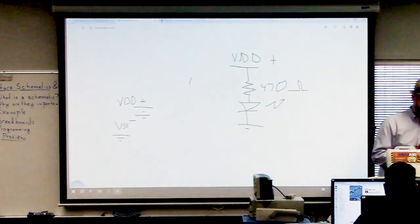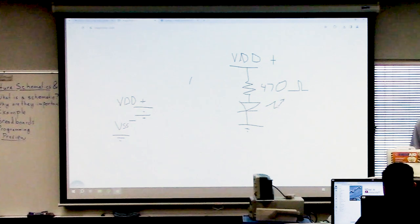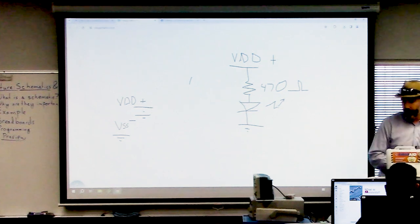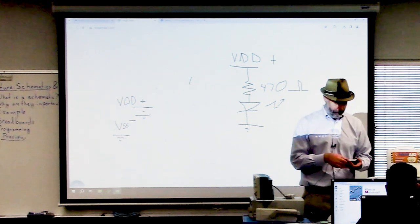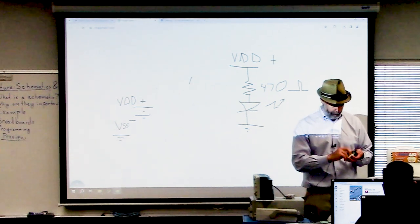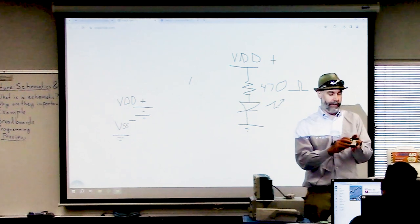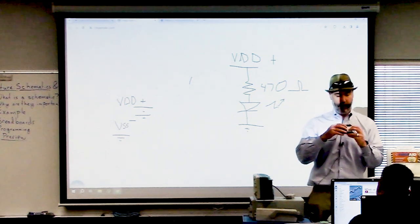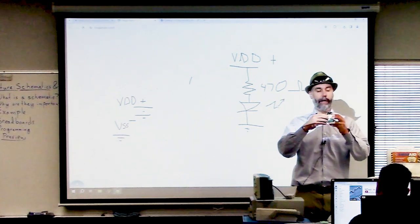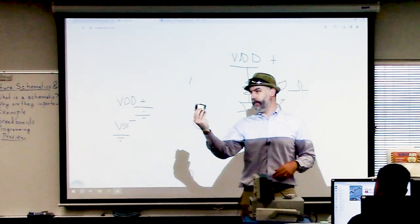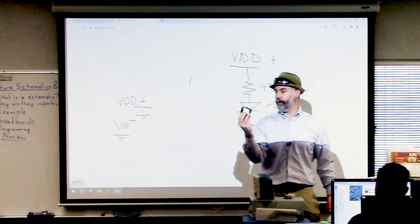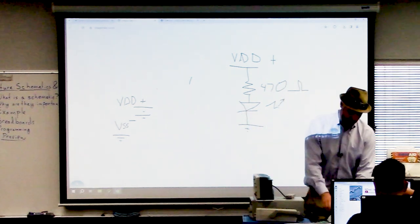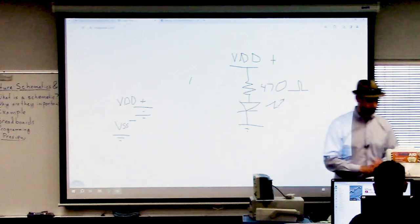That's the first circuit we're going to build. I'll show you right here — the resistor is connected from VDD to the LED, and the LED is connected to ground. That LED is just lit up constantly because it's connected to power all the time. If you build this correctly, the LED should light up.